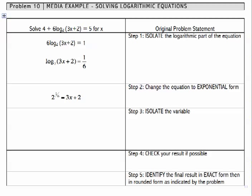If I take that step, I get something that looks like what I have here. Now I can move to step 3, which is to isolate the variable.